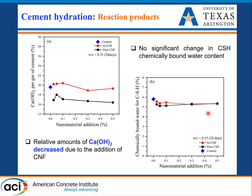We also examined reaction products using thermogravimetric analysis, from which we determined the calcium hydroxide amount and the chemically bound water in C-S-H. For the silica-cellulose nanocomposite, calcium hydroxide amount was very similar to the control batch, but for pure cellulose nanofiber there was a drop. Cellulose has negatively charged carboxyl surface sites that can bind calcium ions, which explains that drop in calcium hydroxide amount.